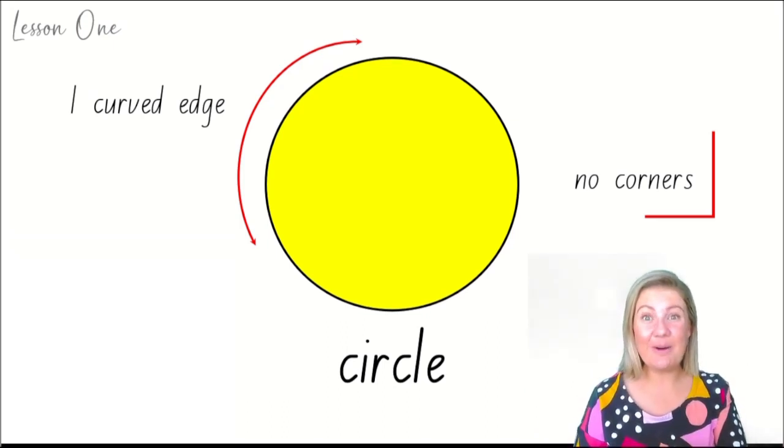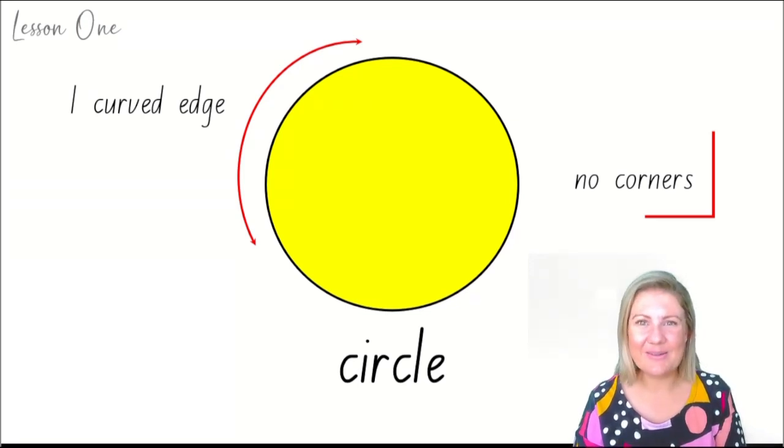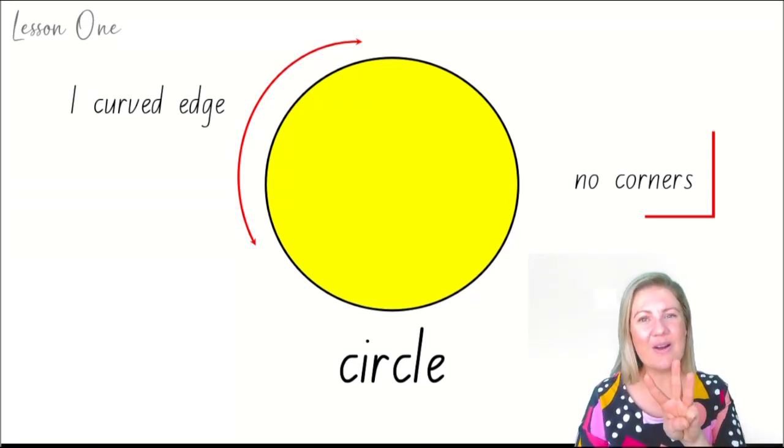Kindergarten, stay where you are. Use your eyes to look around. Can you see any circles? You don't need to get up and get those circles, but can you see circles around you? We're spotting circles. Can you see three circles with your eyes nearby around you?